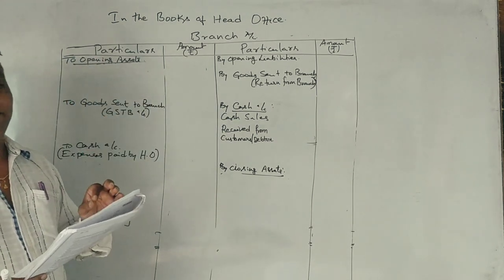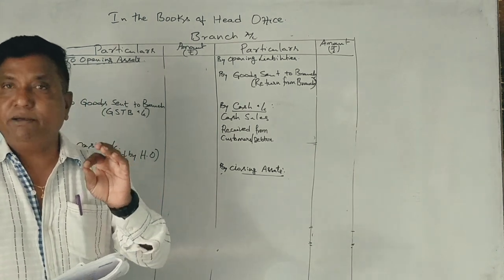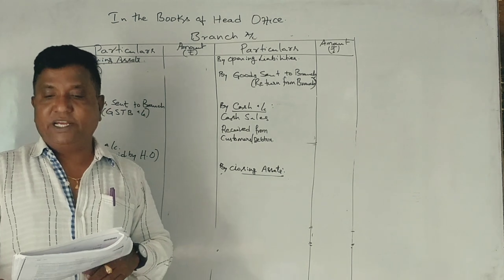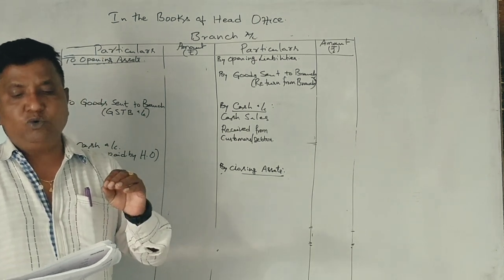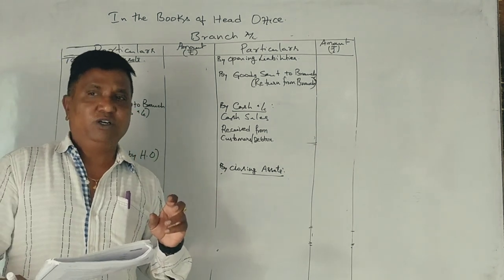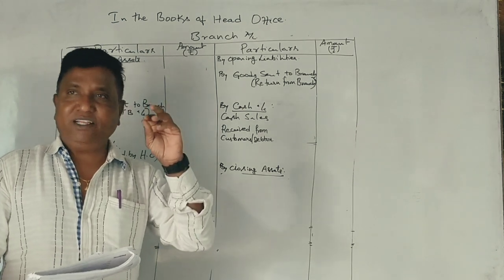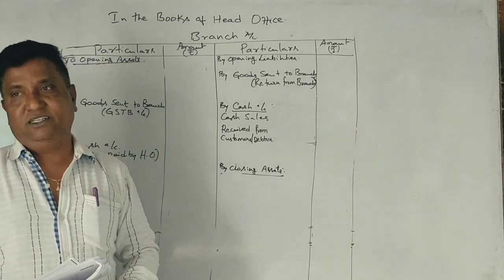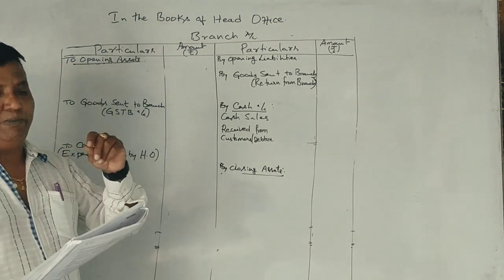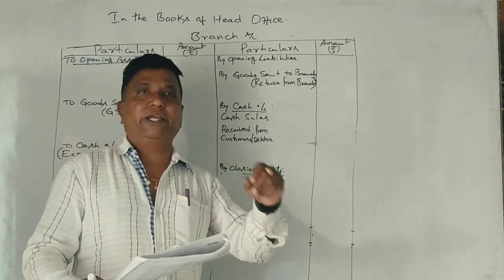Hindustan Company Limited invoices goods to a Belagavi branch at cost. The branch sells goods only on cash basis. All cash received being remitted to head office account by the branch regularly.